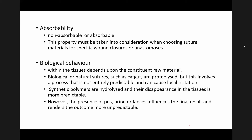Another important behaviour is the biological behaviour of the suture within the tissue, which depends upon the constitution of the raw material. Natural sutures such as cat gut are proteolysed, but this involves a process that is not entirely predictable and can cause local irritation. Cat gut is one example of biological or natural sutures — they are proteolysed once inside the body.